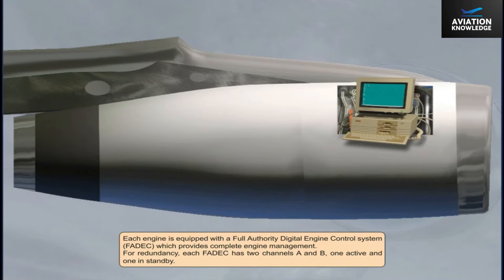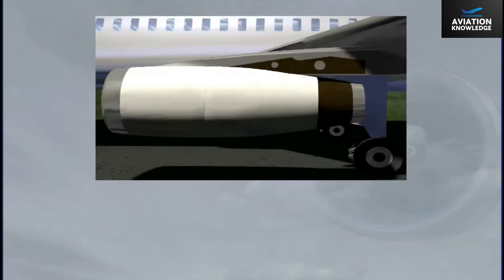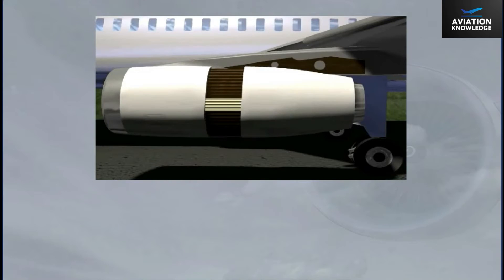For redundancy, each FADEC has two channels, A and B — one active and one in standby. Each engine has reversers, which are hydraulically actuated.